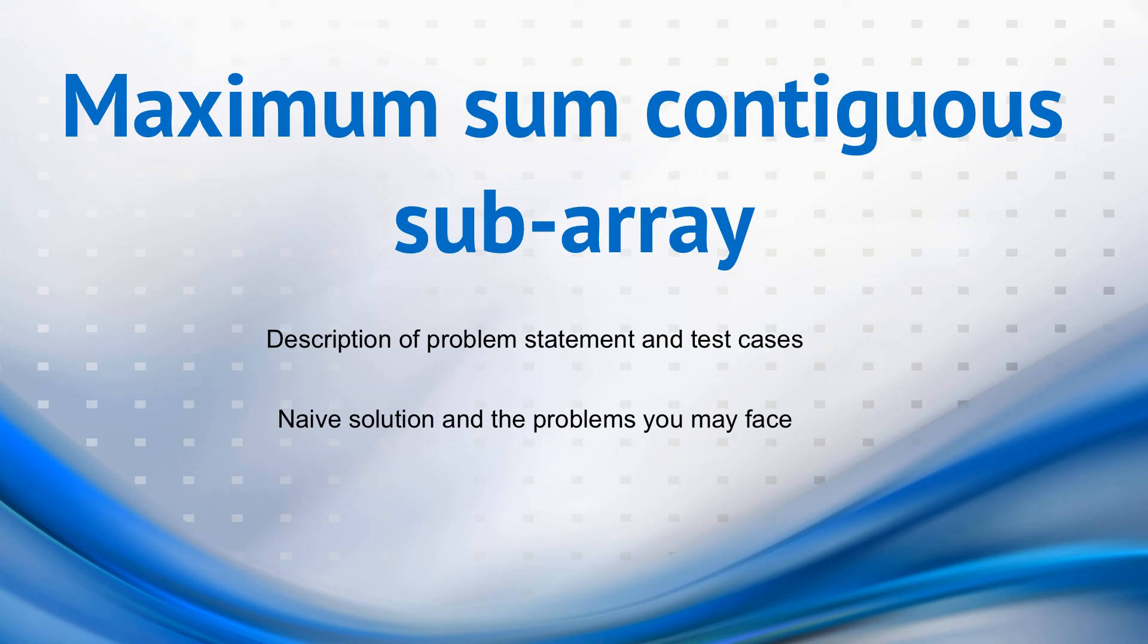we would understand the problem statement and define a contiguous subarray. Then, we would try to solve it in a naive way and see what problems could occur. Next, we would optimize the solution and discuss Kadane's algorithm followed by a dry run of the code. So, let us dive into the problem.